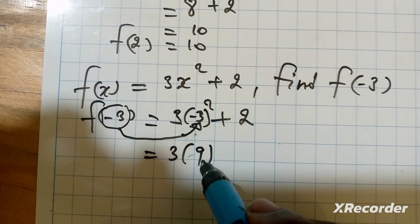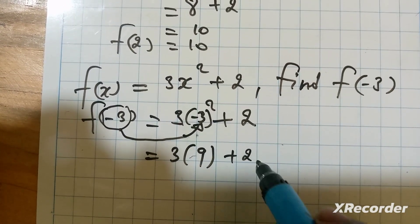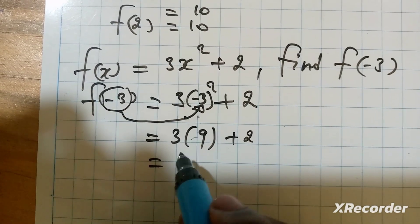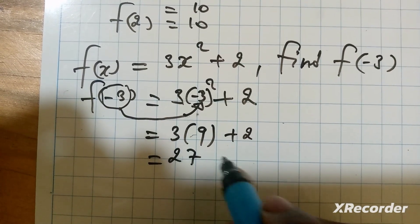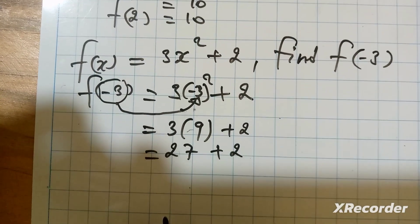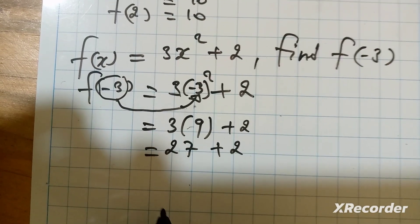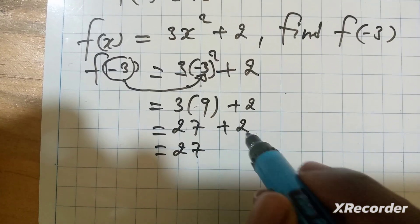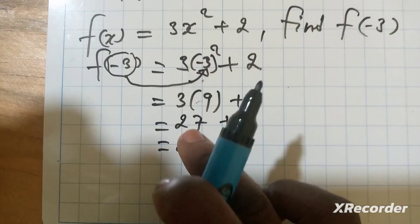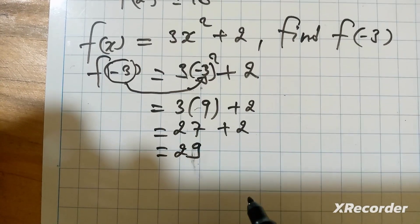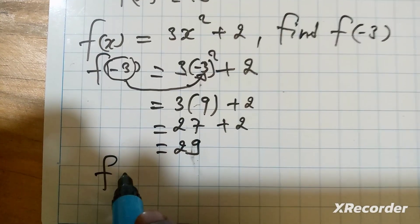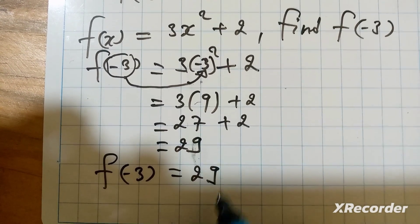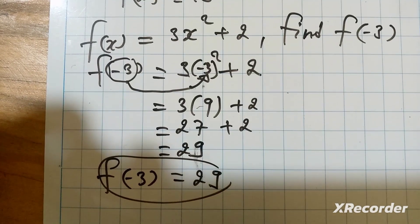Then 3 times 9 plus 2. This is 3 times 9 equals 27, then plus 2. At this time, you have 27 plus 2, which is 29. So f of negative 3 equals 29.